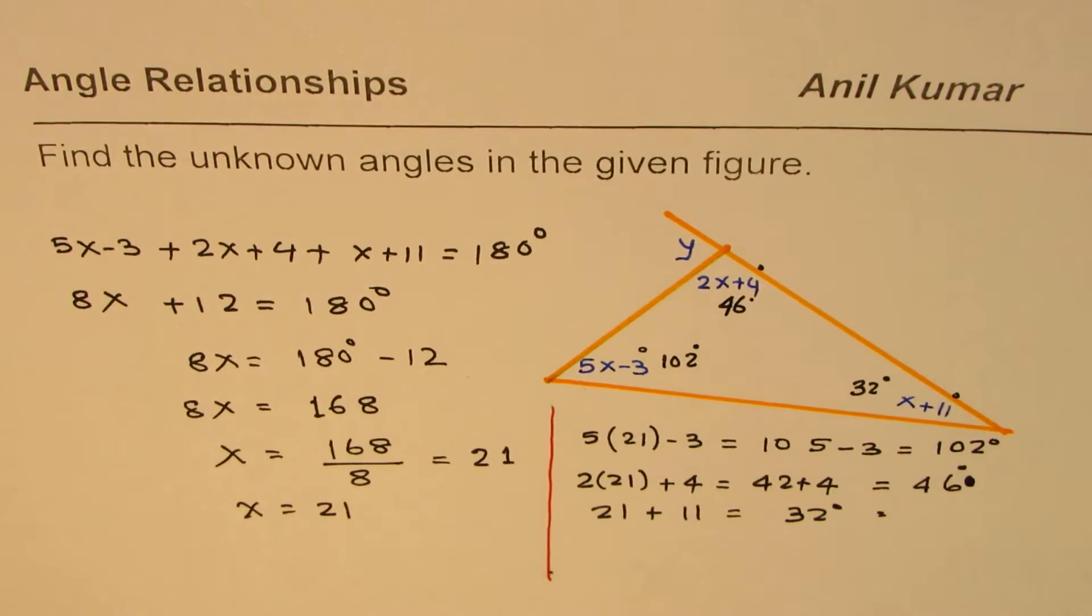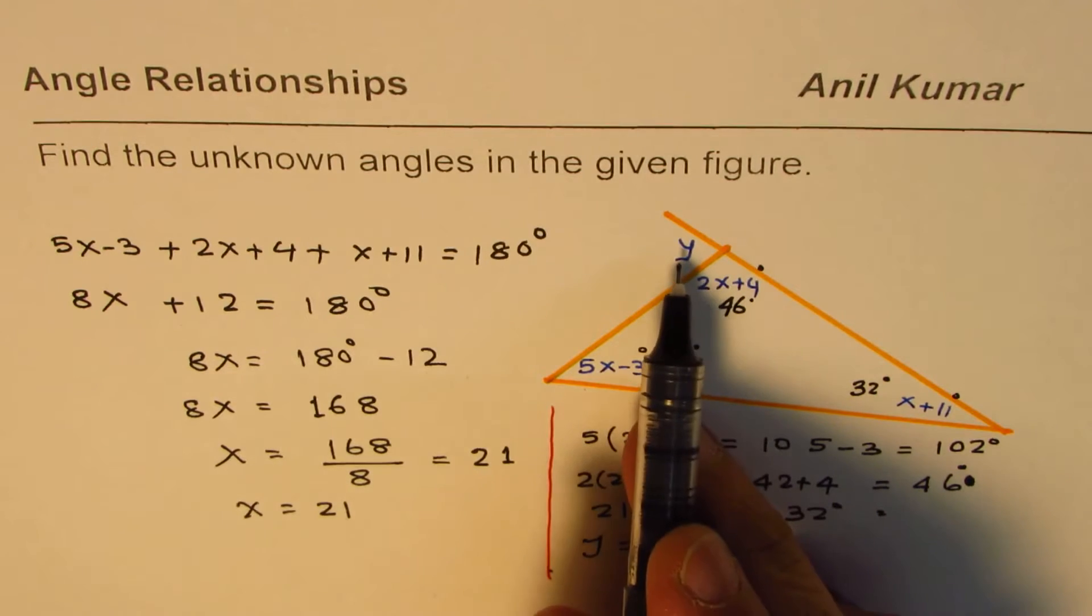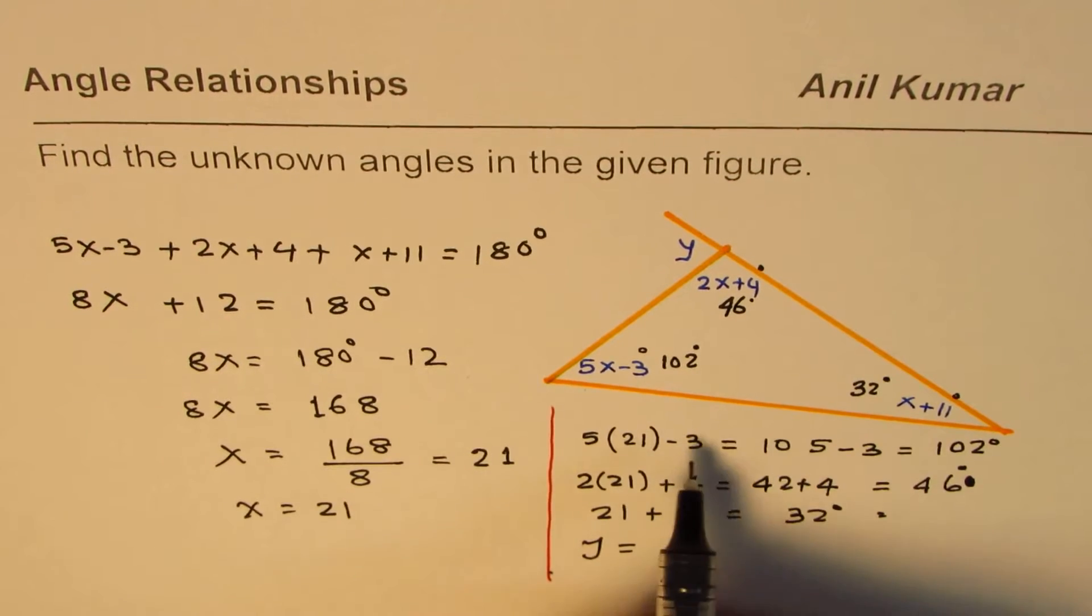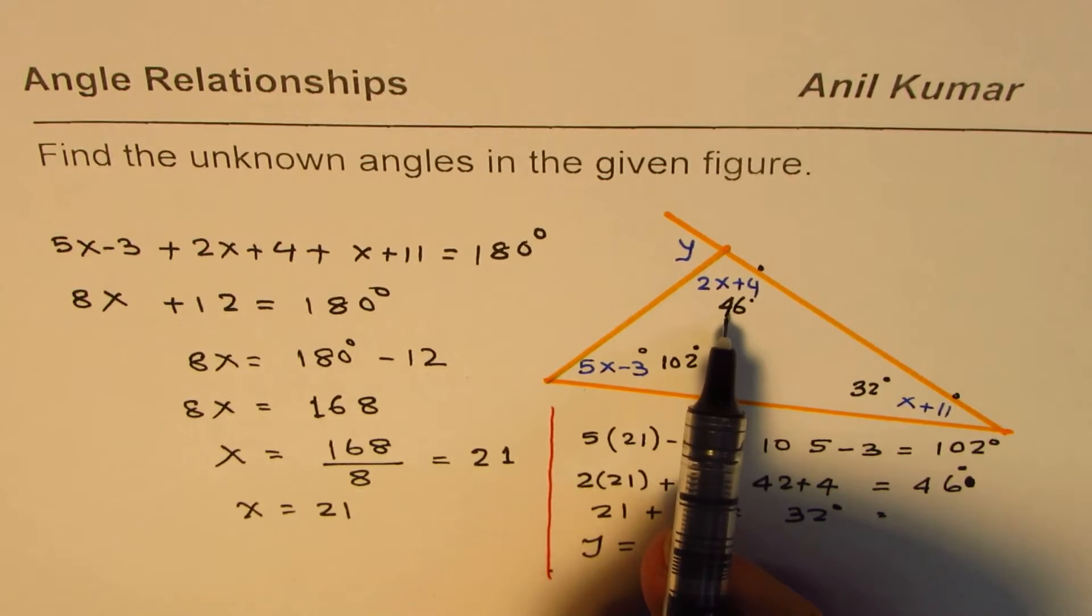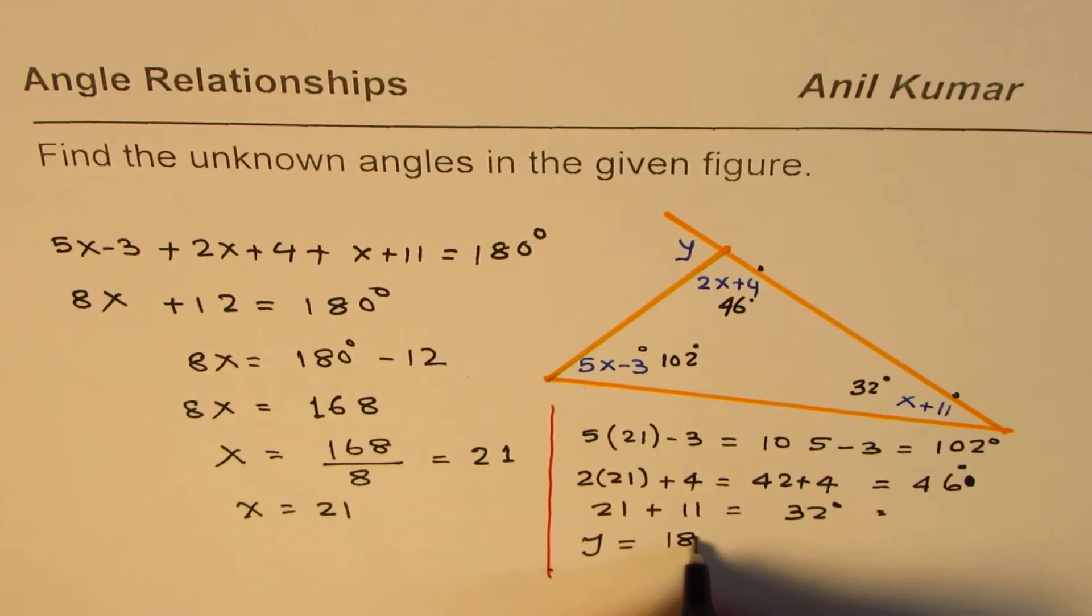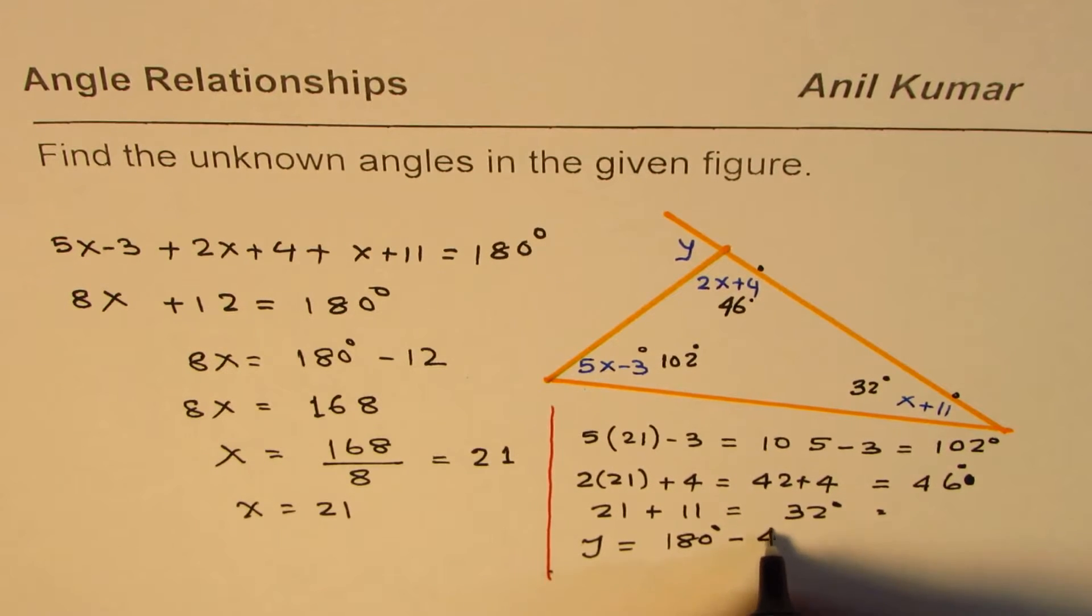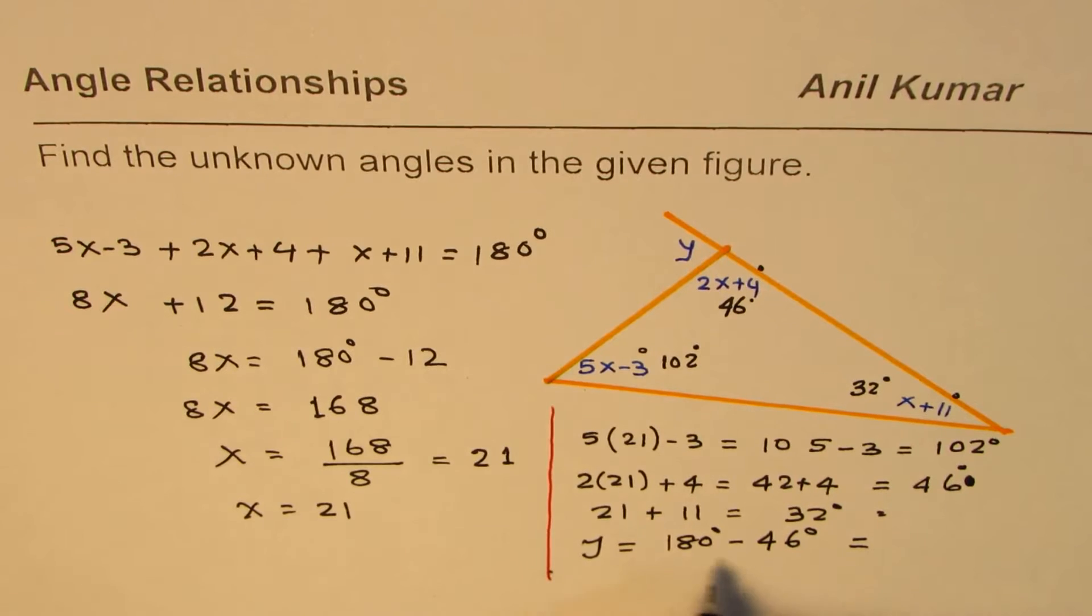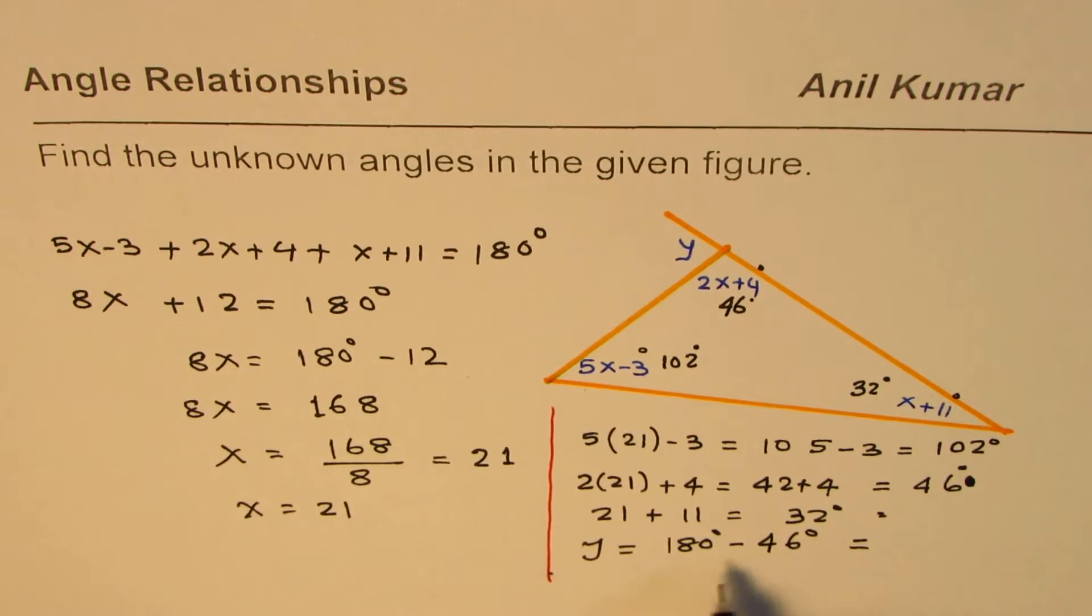Now, what is y equal to? y should be equal to sum of these two, it is an exterior angle. You can add this up, or you could do 180 minus 46, as you wish. 180 degrees minus 46 seems to be simpler. So we can do this and find the answer.